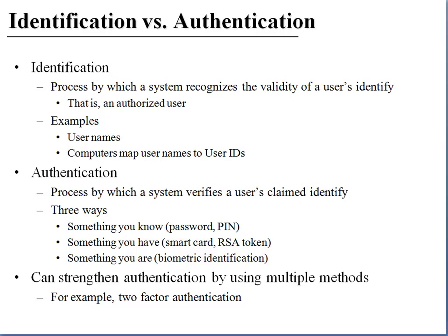Authentication, on the other hand, is a process by which a system verifies a user's claimed identity — checking to make sure that the user is who they say they are. There are three ways to verify a user's identity. The first is something the user knows, for example a password or PIN number.